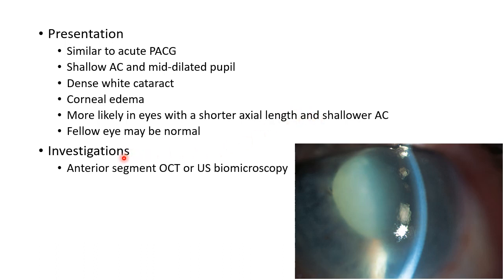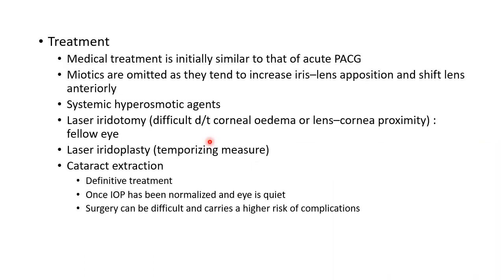Coming to the investigations done for phacomorphic glaucoma: we can do anterior segment OCT or ultrasound biomicroscopy to diagnose it. Coming to treatment, medical treatment is initially similar to that of acute primary angle closure glaucoma — we have to control the intraocular pressure. Miotics are omitted as they tend to increase iris-lens apposition and shift the lens anteriorly.